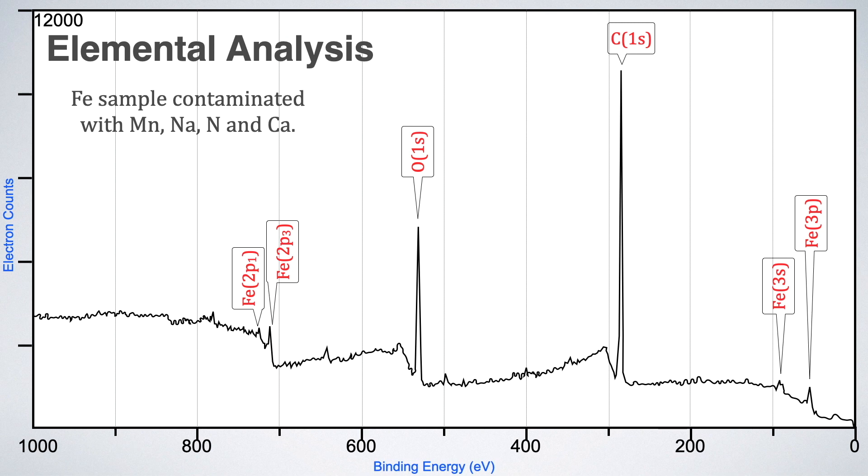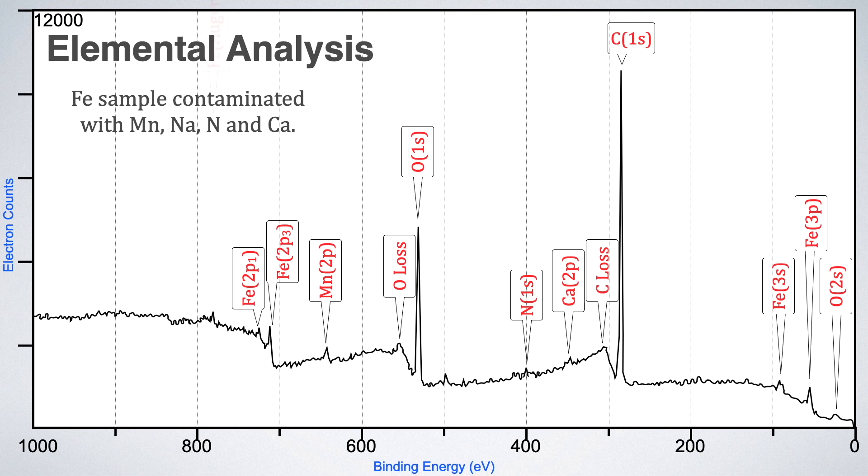The broad peak at 304 and 553 electron volt are due to the losses of carbon 1s and oxygen 1s electrons. Losses we will discuss in detail in upcoming videos. Also, oxygen 2s peak is visible at 24 electron volt. Some of the peaks of very low intensities are visible like calcium 2p at 348 electron volt, nitrogen 1s at 400 electron volt and manganese 2p at 643 electron volt. The signal for these peaks are very low but still they are present.